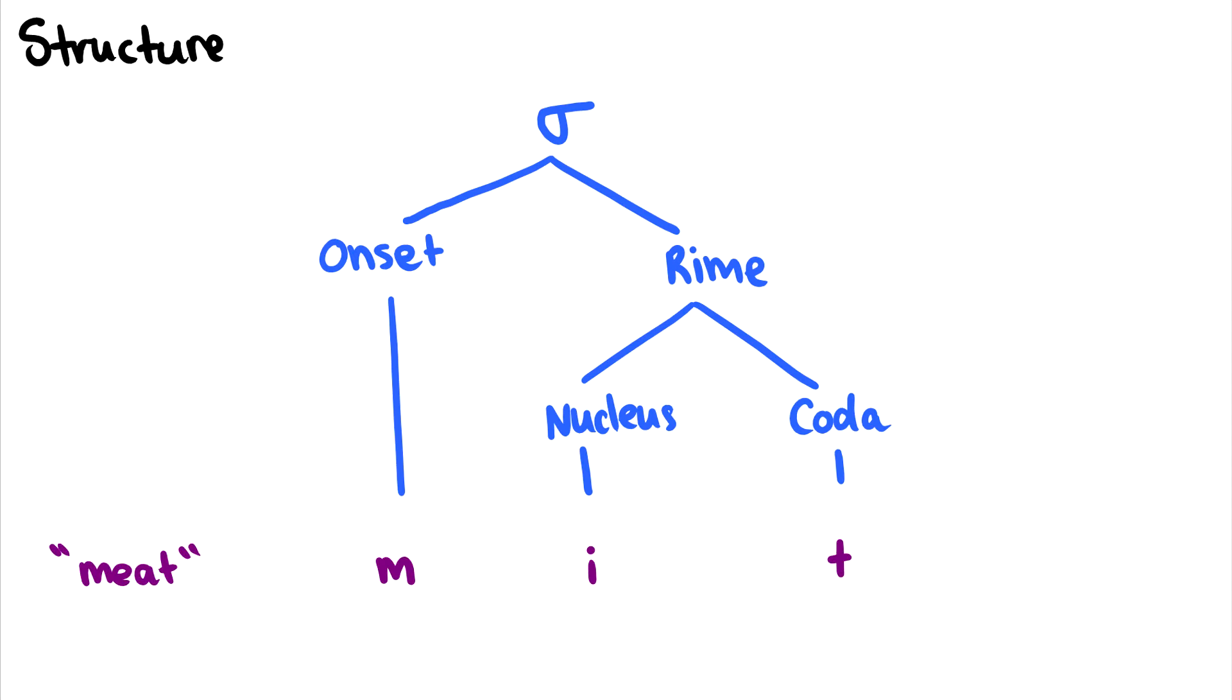So let's talk about the structure of a syllable. And to show the structure, I have the word meat. And it's very convenient because it has exactly three sounds, one sound in each part of the syllable. Let's start at the very top. The first thing we have is the syllable. And this is the sign for a syllable, which is just a lowercase sigma in Greek. This is the symbol you'll see for syllable everywhere.